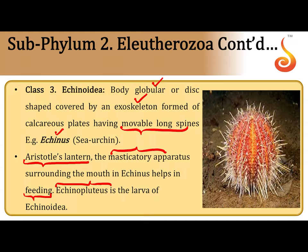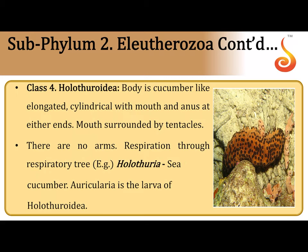Echinoidea also exhibit indirect development — the larva of Echinoidea is the echinopluteus larva. The last member under Eleutherozoa is what looks like a cucumber, and that's why it is referred to as a sea cucumber. The scientific name is Holothuria, and the class to which it belongs is Holothuroidea. The body is very leathery, without any spines, cylindrical in shape.